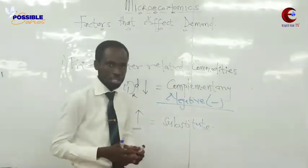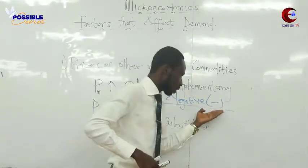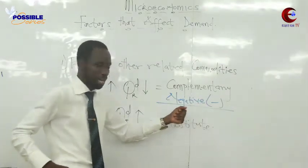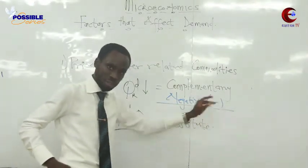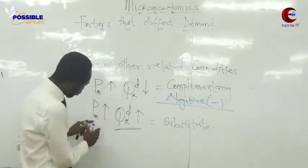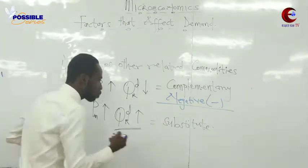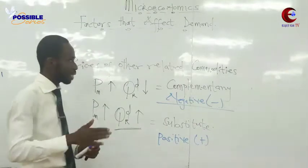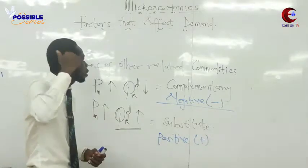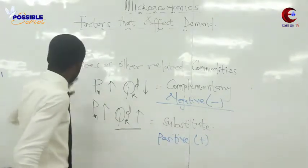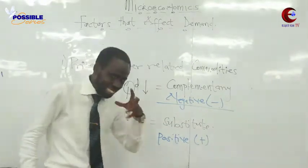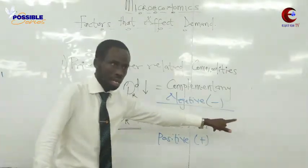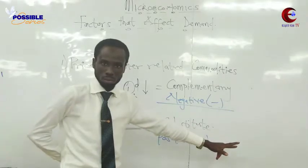For example, the University of Cape Coast first quiz in the 2019/2020 academic year used this concept. In the substitute case, price is going up and quantity is also going up, so there is a positive relationship. So if you are explaining the factors that affect demand and you reach prices of other related commodities, you must explain it for complementary goods and also for substitutes.